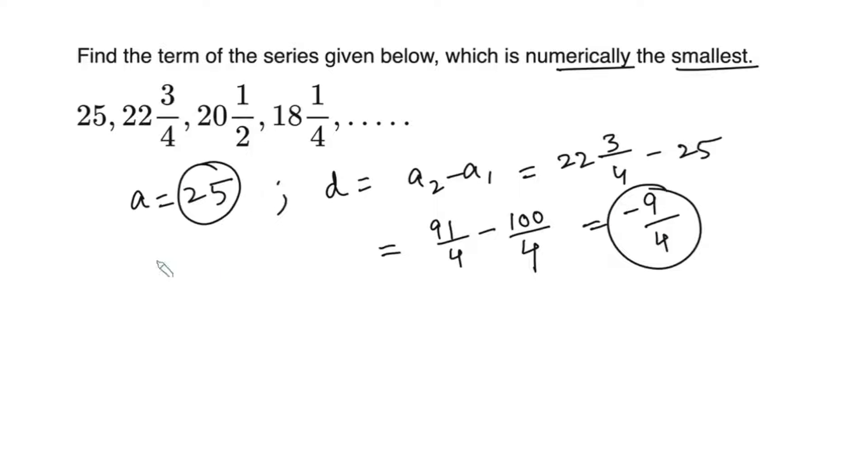So we have the first term, we have the common difference. We want to find the term which is numerically the smallest term. That means we want to find the term which has smallest positive value. And after that, the terms will become negative.